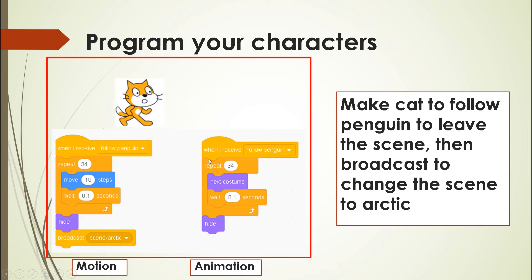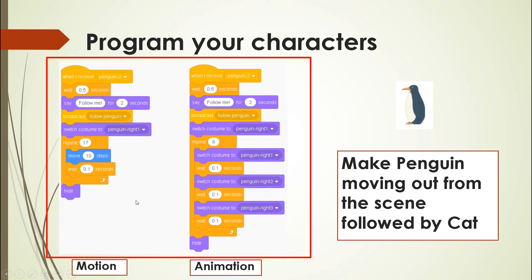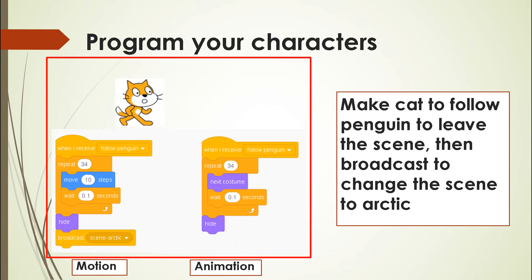After receiving 'follow penguin', the cat also moves to the right and disappears. After the cat disappears, there's a broadcast function that tells the backdrop to change to the arctic scene. The penguin doesn't carry this broadcast because it leaves the screen before the cat — only after the cat disappears does the scene change to arctic.